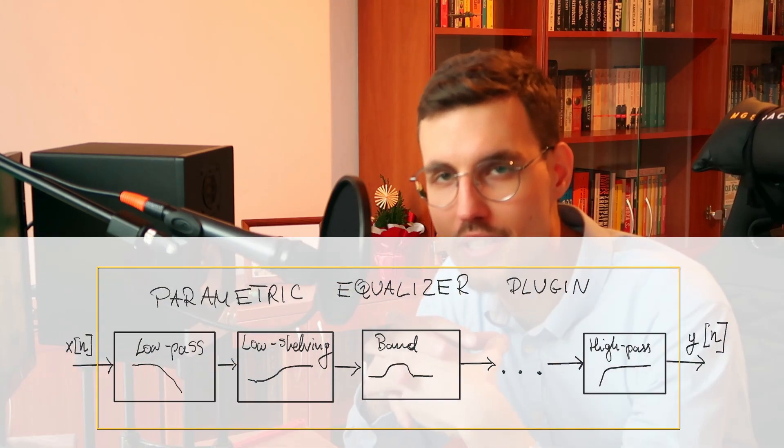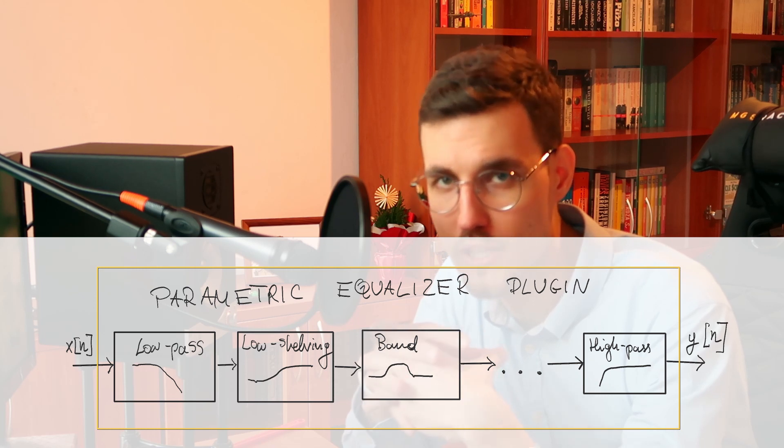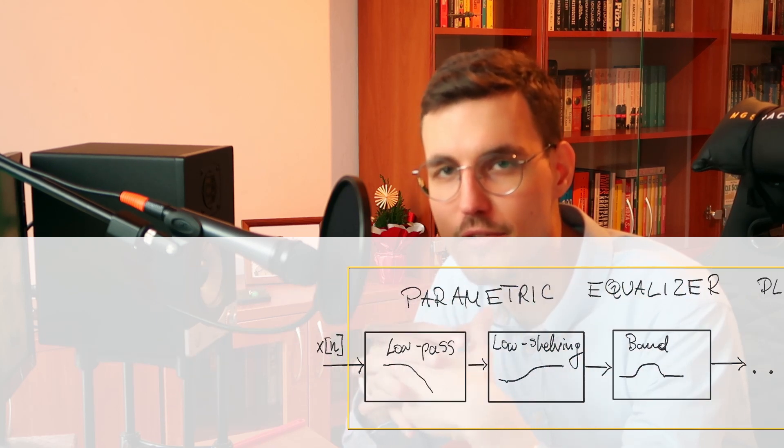Well, a parametric equalizer is actually a series of parametric filters, each of which alters the sound in a different way. In this video, I'll discuss all types of parametric filters, what controls they have, and how they alter the sound.